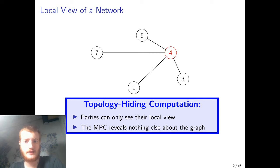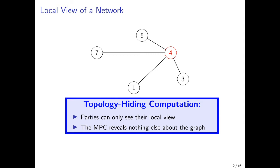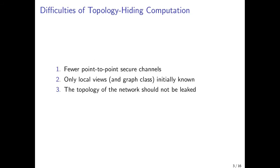Now that we have this, we can define roughly what topology-hiding computation is. Parties know their local view, but that's it. They should not learn anything else when running the topology-hiding computation protocol. What makes this notion harder to achieve than normal MPC? We have a restricted communication model, restricted information available to the players about the network, and an extra privacy requirement that the topology should not leak. All of this makes it harder.